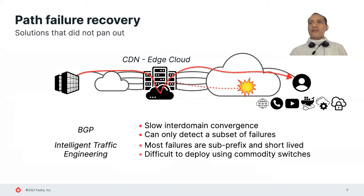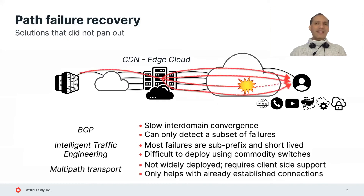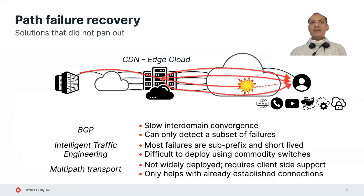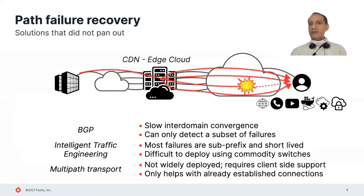In addition, the economics of edge clouds favor commodity switches over programmable ones. Edge cloud PoPs need to be as close to users as possible, which places them in some of the most expensive real estate on the planet. Spending money on hardware which does not generate revenue is unattractive. Finally, it may seem that the ideal solution would be to use a multipath transport protocol. This would allow us to use all available paths, and if one breaks, dynamically shift load to the good ones. Unfortunately, this is ill-suited to the massive reach of edge clouds, which need to serve essentially every single client device in existence. Multipath transport protocols, which require client-side support and hence are not widely deployed, are not a good fit. In addition, the dynamic load shift only helps long-running, established connections. It does not help connections during the three-way handshake, and it is also not very useful for very short flows, which are crucial for many edge cloud applications.